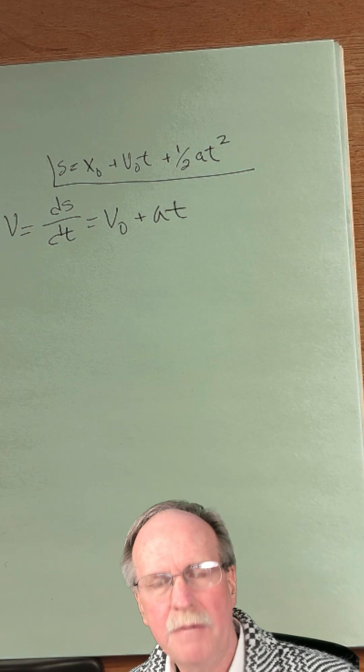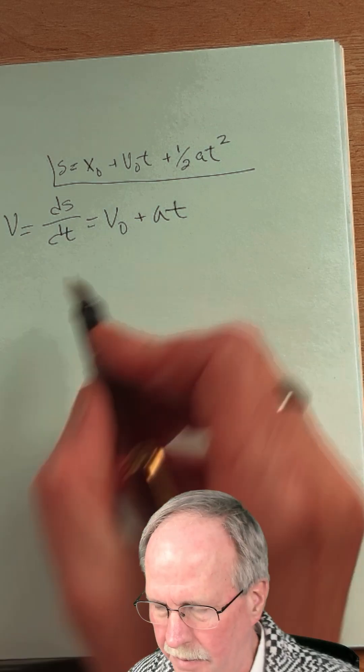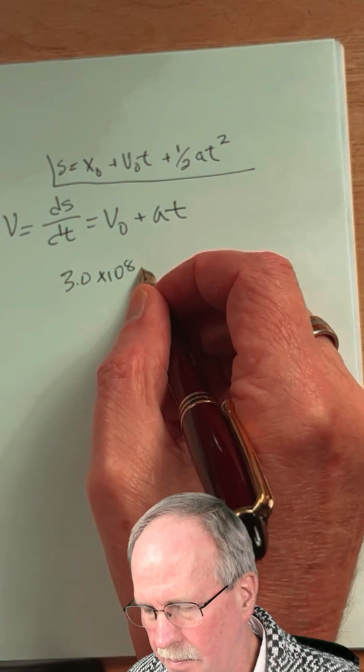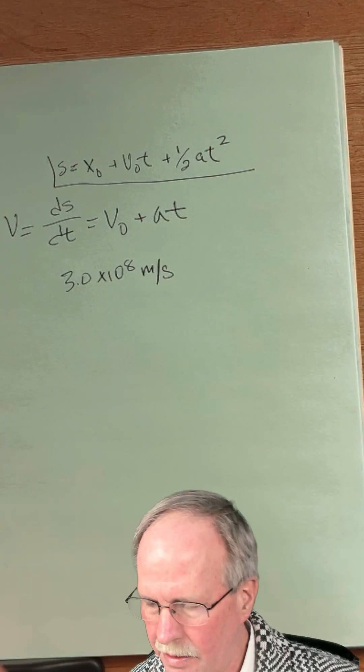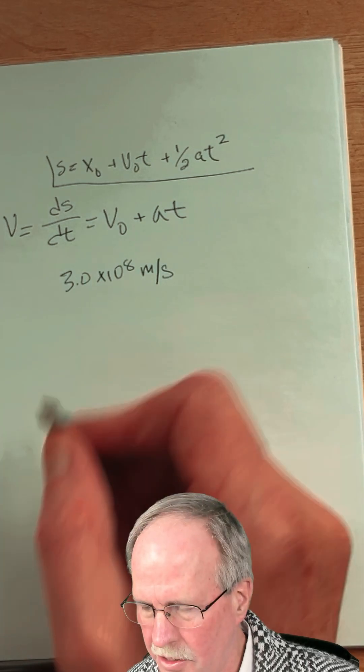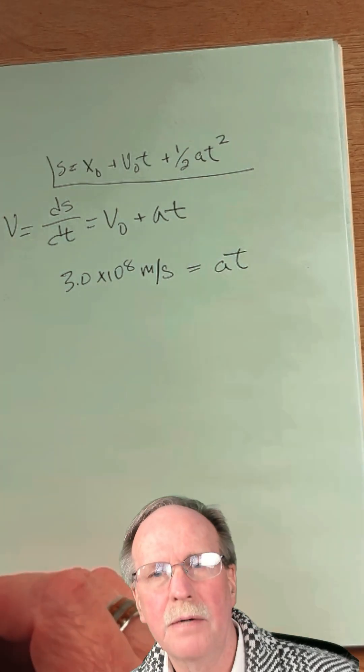What I want to do is find out how long it will take for the earth to reach the speed of light, which is 3.0 × 10⁸ meters per second. So the initial speed of the earth we'll say is zero, so that'll drop out, and that will equal the acceleration times time.